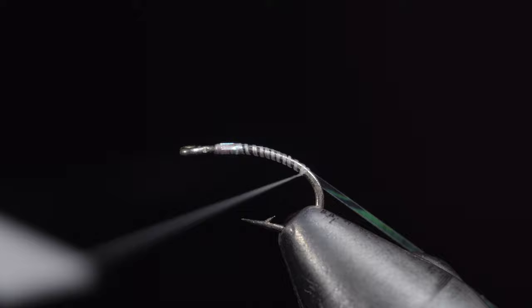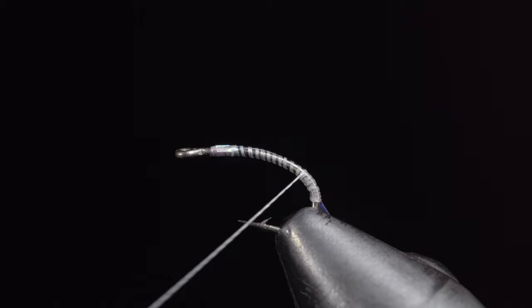We'll continue wrapping well into the hook bend, at which point we'll reverse directions and begin building up a smooth transition towards the head of the fly.